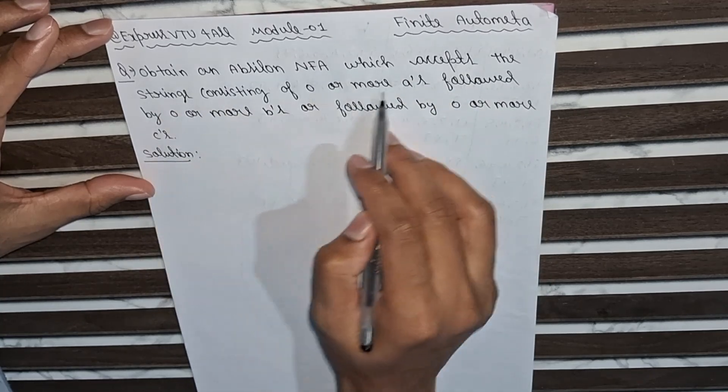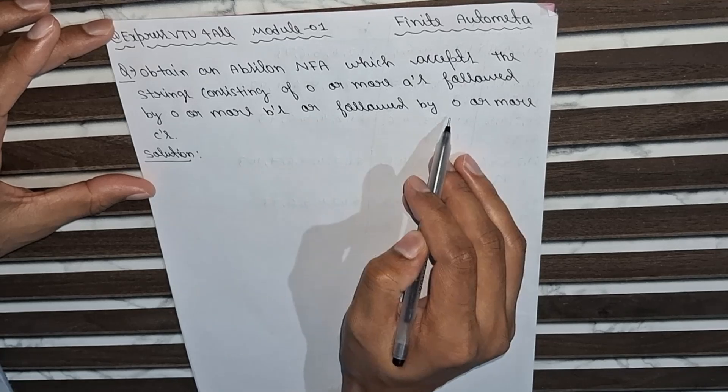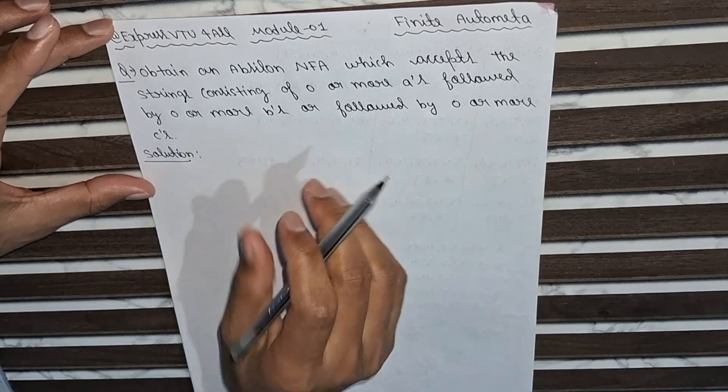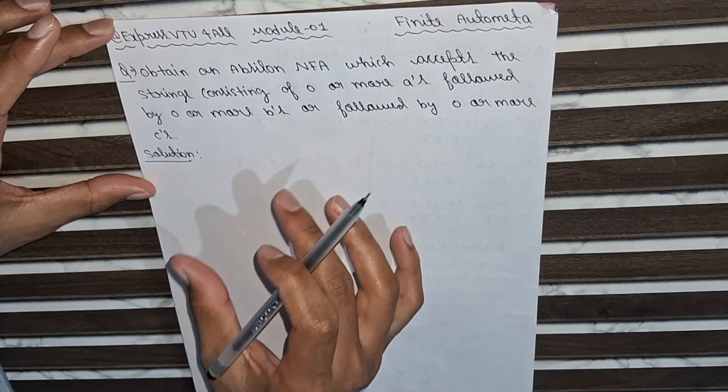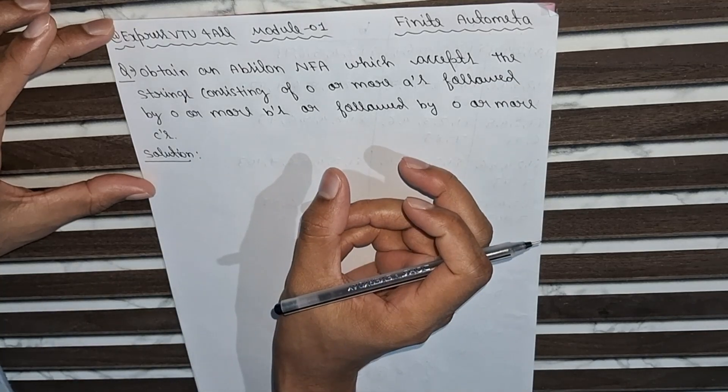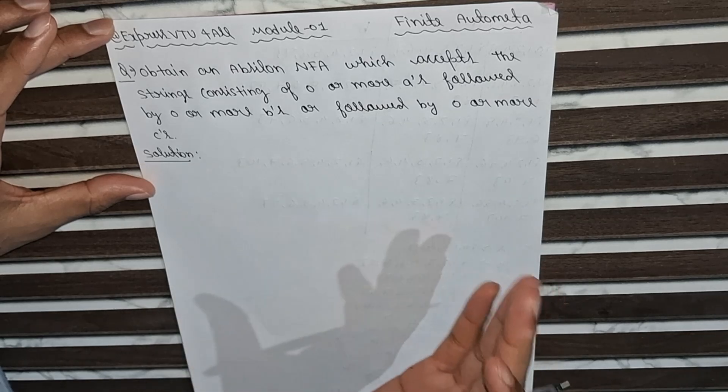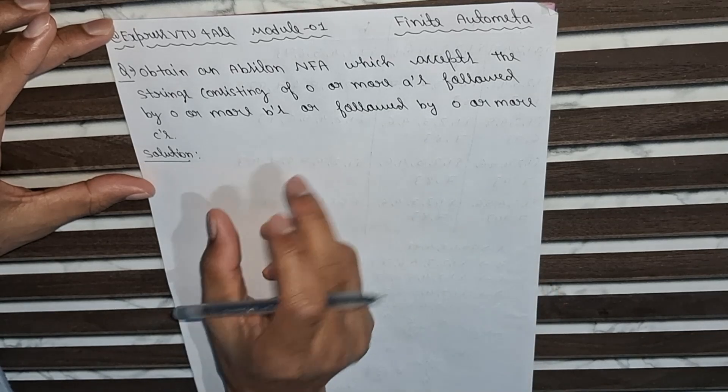...consisting of 0 or more a's followed by 0 or more b's or followed by 0 or more c's. So in this question, we have to draw an epsilon NFA diagram in which 0 or more a's will be there, and 0 or more b's will be there, and 0 or more c's.